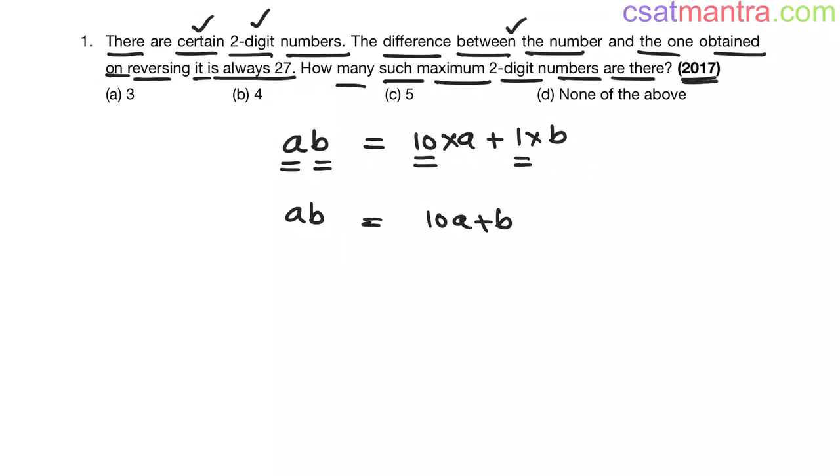Now the difference between the number and the one obtained on reversing it. First reverse it my friends. That is B, A. Now I can write B, A as 10 into B plus 1 into A. B is in tens place so multiplied with 10. A is in ones place so multiplied with 1. So BA equals 10B plus A.